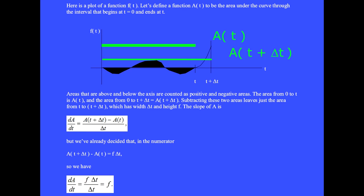Subtracting these two areas leaves just the area from t to t + Δt, which has width Δt and height f. The slope of A is dA/dt = (A(t + Δt) - A(t))/Δt.